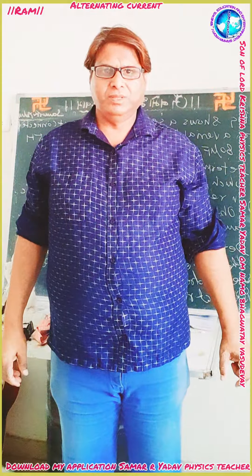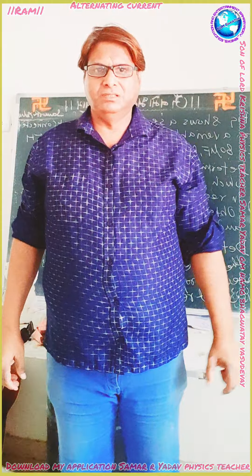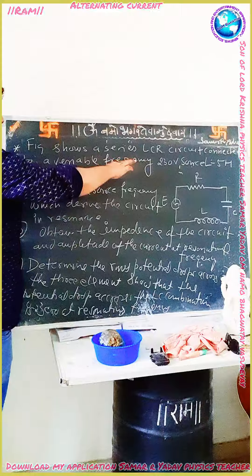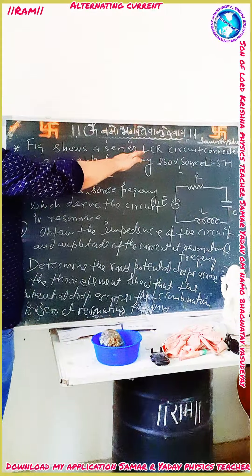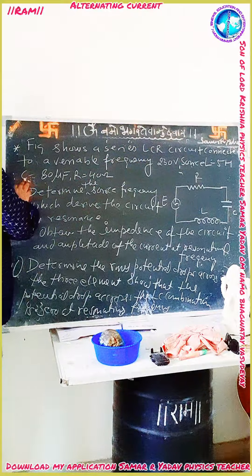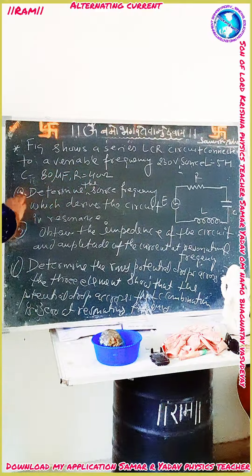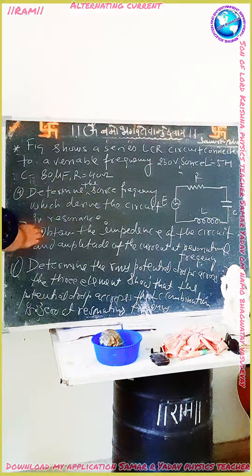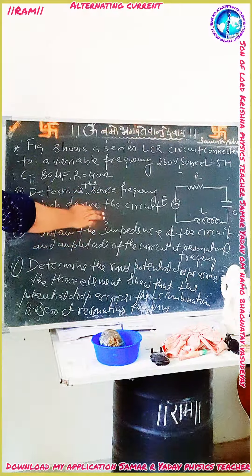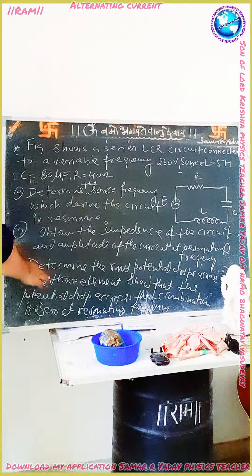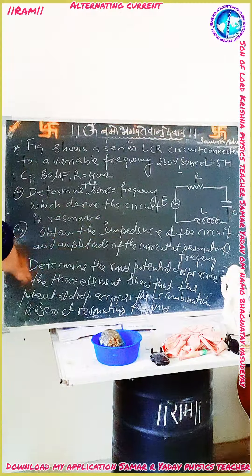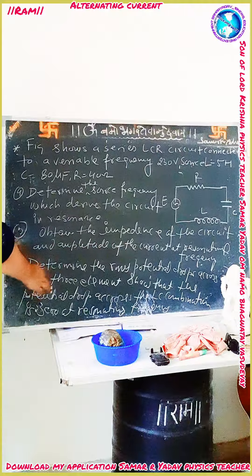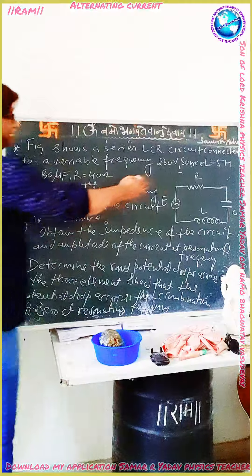Today in physics, AC current, the numerical is like this. A series LCR circuit is connected to a variable frequency 230 volt source. L is equal to 500 mH, capacitor C is equal to 80 micro farad, and R is equal to 40 ohm. First, determine the source frequency which drives the circuit to resonance. Second, obtain the impedance of the circuit and amplitude of the current at resonating frequency. Last, determine the RMS potential drop across the three elements so that the potential drop across the LC combination is zero at resonating frequency.